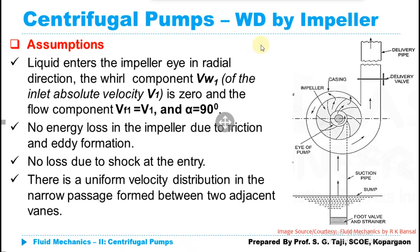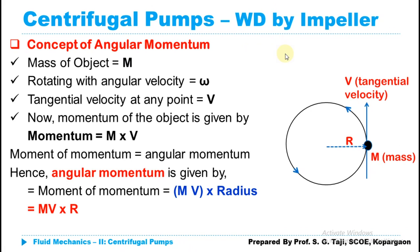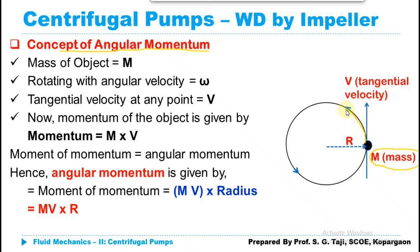There is another important concept in the case of centrifugal pumps: angular momentum. Since the force is exerted in the rotational direction, we need to determine the torque, and for that we need to understand angular momentum. Consider an object of mass m rotating around a circular path with angular velocity omega. Drawing a tangent at any instance gives the tangential velocity v at that point on the circular path.